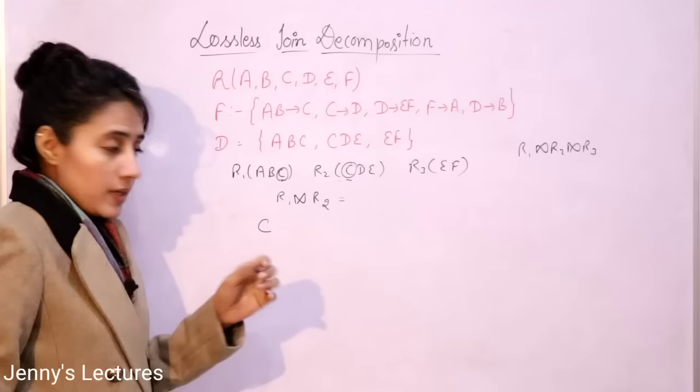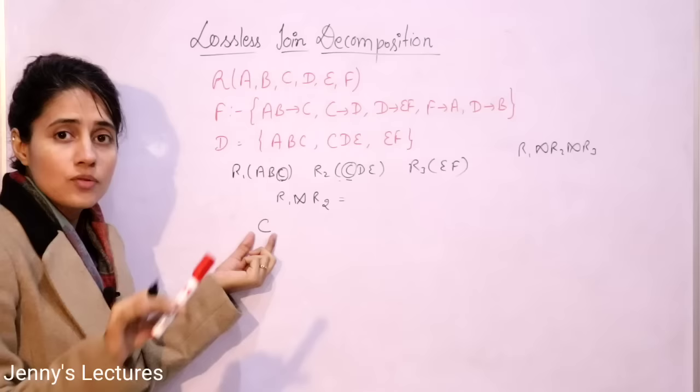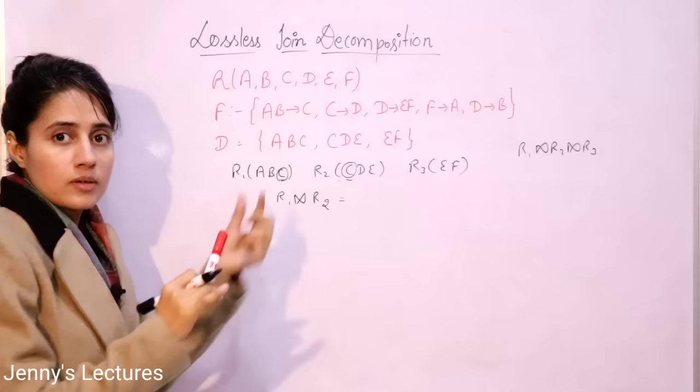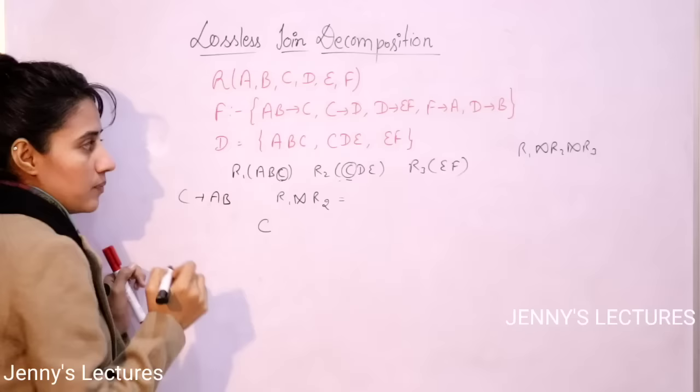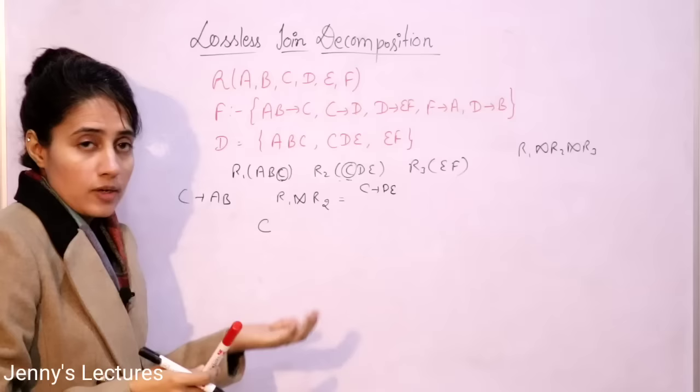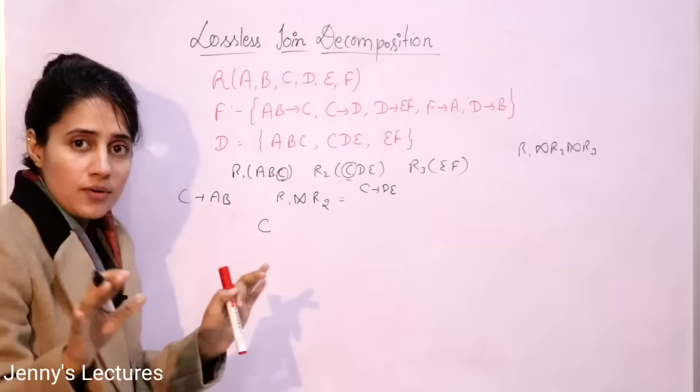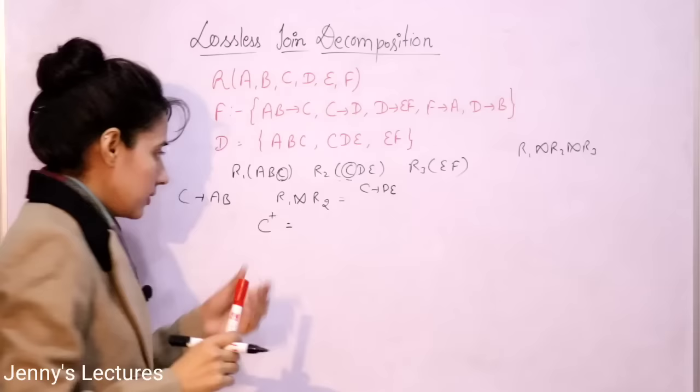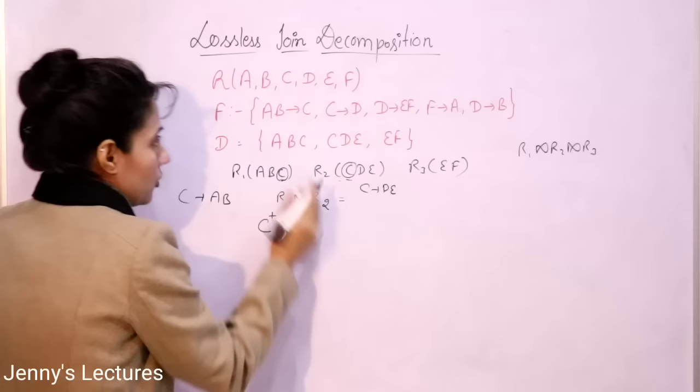C is a candidate key of a relation if C can derive all the attributes of that relation. So for C to be a candidate key of R1, C must drive both A and B. For C to be a candidate key of R2, C must drive D and E. The simple trick to check this is to find the closure of C using the given functional dependency set.